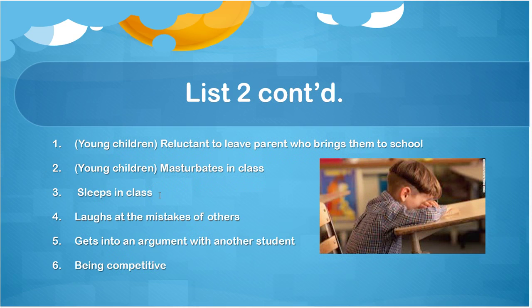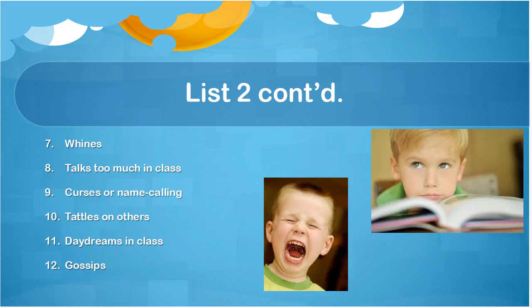Beginning again with young children: reluctant to leave a parent who brings him or her to school; masturbating in class; sleeping in class; laughing at the mistakes of others; getting into an argument with another student; being competitive. As we go down this second list, we're talking about things that typically fall within the norm for a lot of children and do not necessarily mean there's a mental or emotional illness involved.